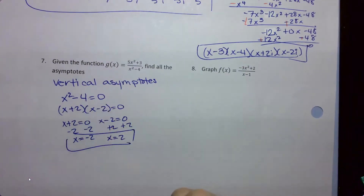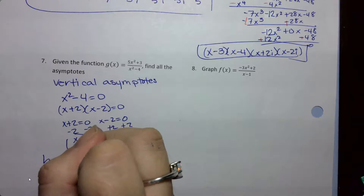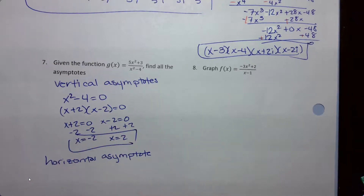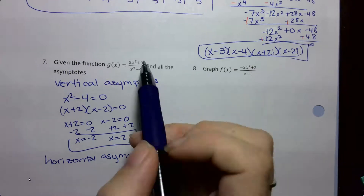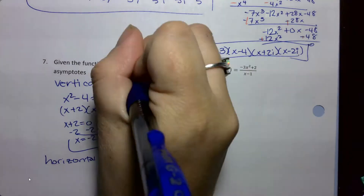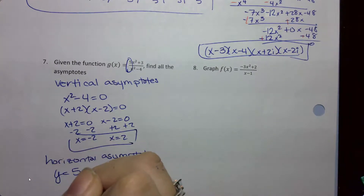Then for my horizontal asymptote, there can only ever be one. I want to look at my degrees. If they're the same degree, I look at my coefficients. If they're different degrees and the numerator is larger, I don't have a horizontal — I have a slant. If my numerator is smaller than my denominator, then I have y equals 0. In this instance they're exactly the same degree, so I look at my coefficients: I have 5 over 1, which is 5 divided by 1. So my horizontal asymptote is y equals 5.